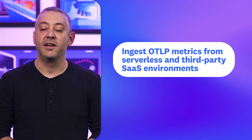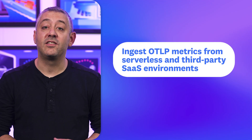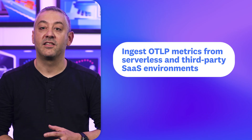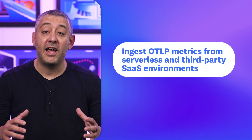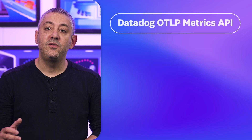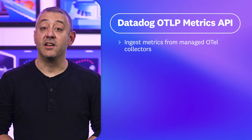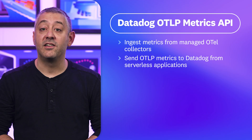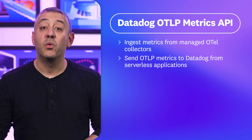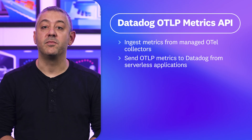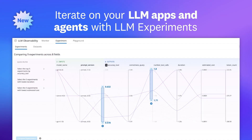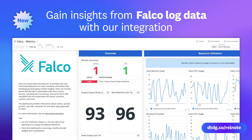Capping off our new feature segment, we're expanding our OTL support with Datadog's new OTLP Metrics API, which enables you to ingest OTLP metrics from serverless and third-party SaaS environments where collectors can't be deployed. With this new feature, you can ingest metrics from managed OTL collectors and send OTLP metrics to Datadog from serverless applications without deploying a collector or our agent. The Datadog OTLP Metrics API is available now. For a full list of this month's features, visit the link shown.